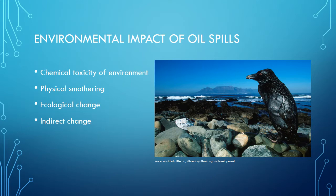Oil spills can have negative environmental impacts both short-term and long-term. Chemical toxicity on the environment means chemicals within the oil spill area are absorbed into the tissues of plants and animals, and could create both non-lethal and lethal effects depending on the chemical. Crude oil can contain mercury, nickel, benzene, toluene, and many more toxic substances. Other problems that can occur are physical smothering of organisms, ecological change, and other indirect changes.